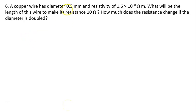A copper wire has diameter 0.5 millimeter. This is the copper wire and diameter is given to 0.5 into 10 raised to the power minus 3 meter and resistivity of the copper wire is given to us rho equal to 1.6 into 10 raised to the power minus 8 ohm meter.